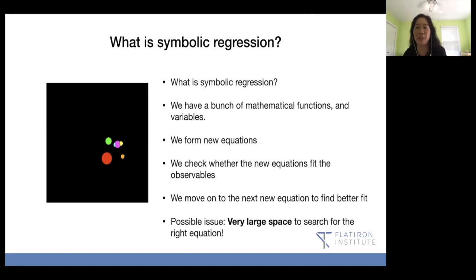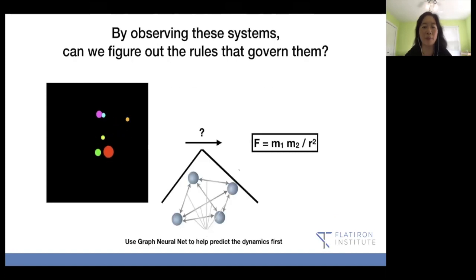If you haven't paid attention to what is symbolic regression, these are the simple, quick summary. We have a bunch of mathematical functions and variables, we can form these new equations, we check this new equation, whether it fits the observables, we move on to the next equation to find better fit. And how you actually do that and how to make it fast is a fairly tricky question, and that's how our PySR package was actually shown to do really well to find the right equation. And it's a very large space.